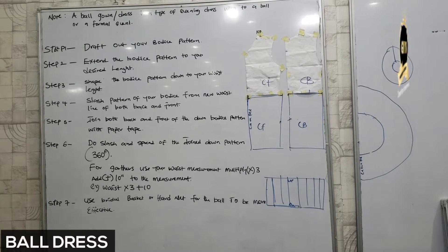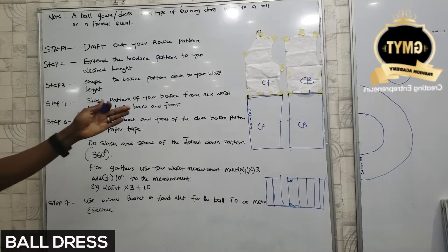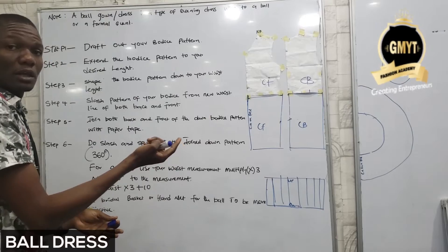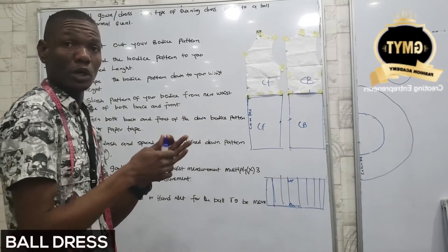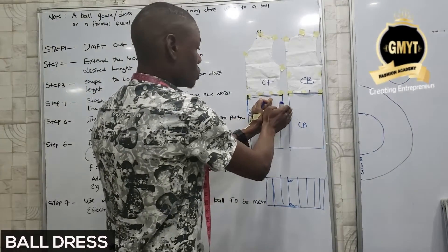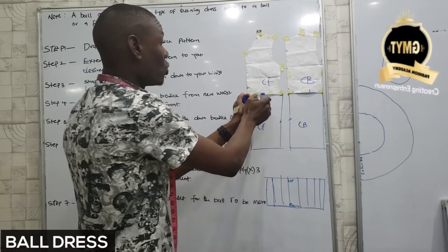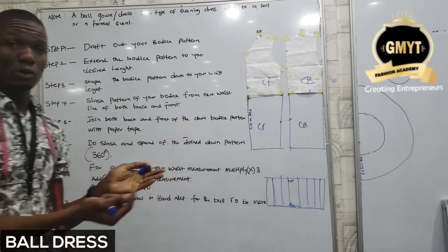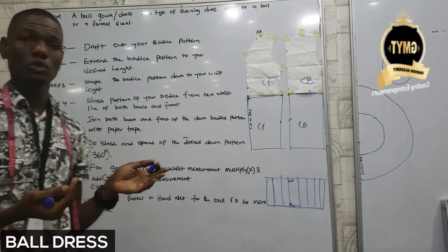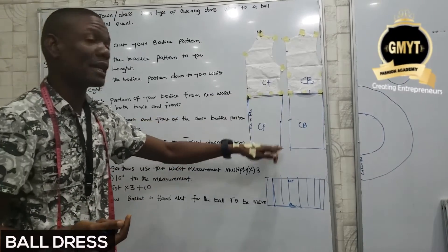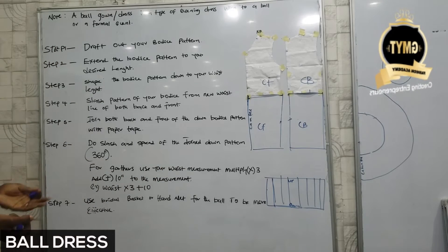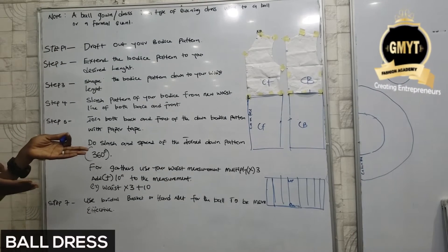Are we good? Now the next step — if you are making guidance for the down part, do the measurement of your waist times 3 plus 10 inches. If you are not using flare for the down part, you are using guidance. You take the waist measurement back and front, whatever you get, multiply by 3 and add 10 inches to it. From that point you can get your desired length — how long you want it — then you cut the fabric. That is for the down part if you don't want to work with the flare.